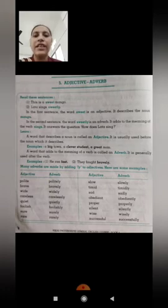In the first sentence, the word sweet is an adjective. In the second sentence, the word sweetly is an adverb. It adds to the meaning of the verb sings. It answers the question, how does Lata sing? Here the word describes the noun mango.